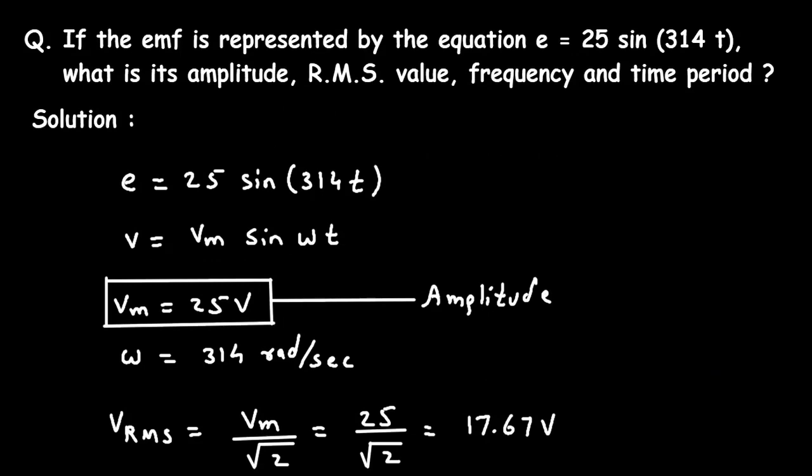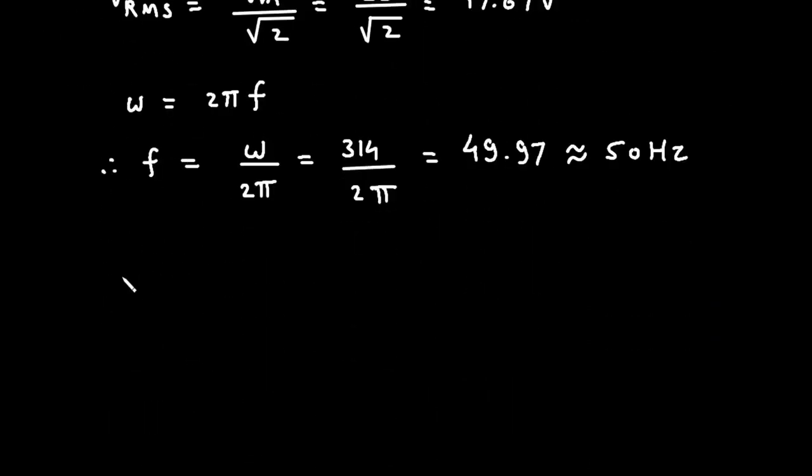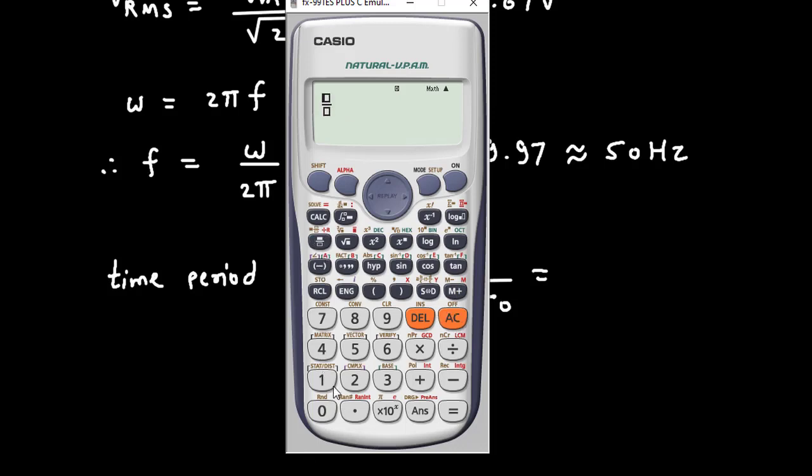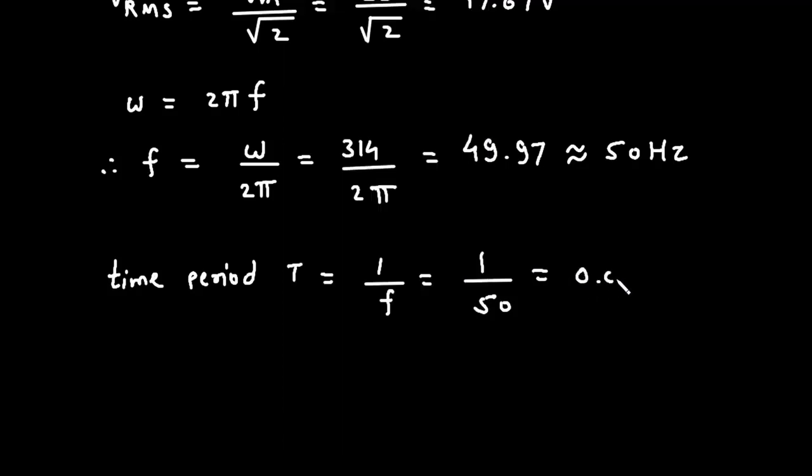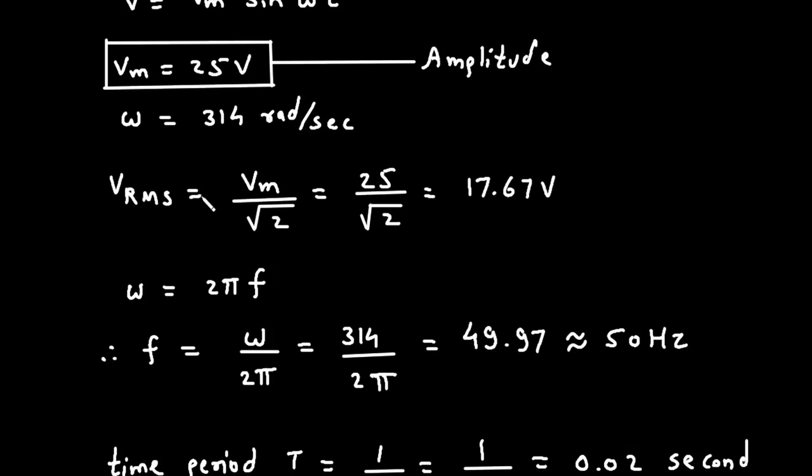Then next we have to find time period. Time period is represented by capital T and equals 1 upon F, which is 1 upon 50, equal to 0.02 seconds. So this is time period, this is frequency, this is RMS value, and this is amplitude.